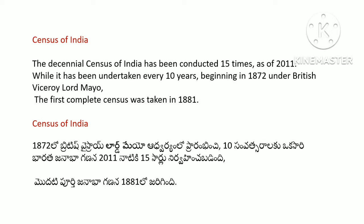The decennial census of India has been conducted 15 times as of 2011. While it has been undertaken every 10 years, beginning in 1872 under British Viceroy Lord Mayo, the first complete census was taken in 1881.